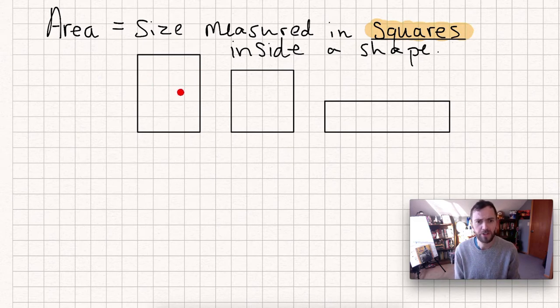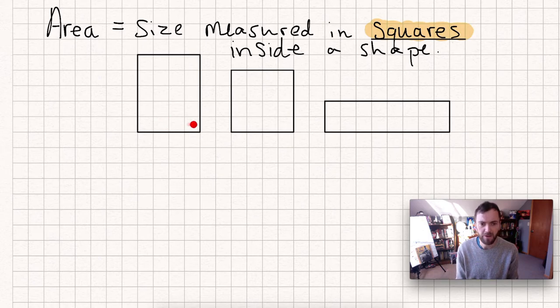But of course that's a very slow way to measure the area of something, right? To have to count all of those squares. That takes forever.